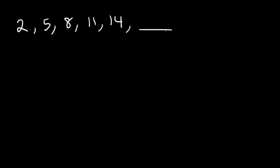Now what we need to do is look for a pattern. Notice that each number has a common difference of 3. To go from 2 to 5 you need to add 3. Likewise to go from 5 to 8 you need to add 3. 5 plus 3 is 8 and 8 plus 3 is 11. Whenever you have a sequence that differs by a common number, this is an arithmetic sequence. If you can add or subtract by the same number you have an arithmetic sequence. So 14 plus 3 will give us the next number 17.